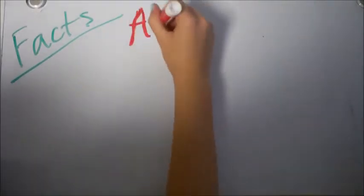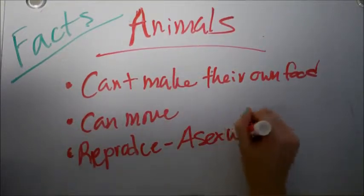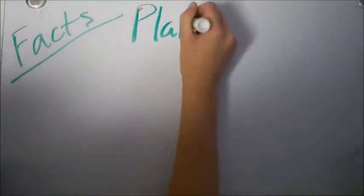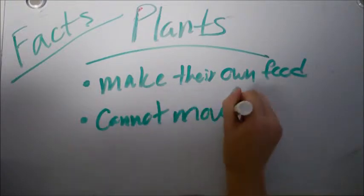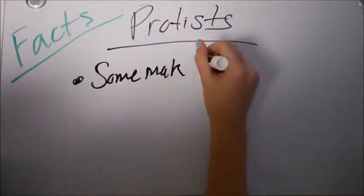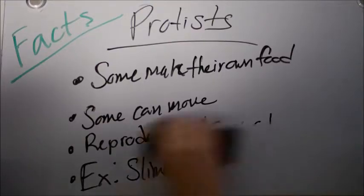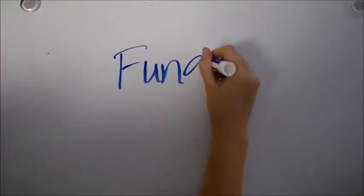Facts about animals is that they cannot make their own food, can move, and reproduce asexually and sexually. Plants make their own food, but cannot move and reproduce asexually and sexually. Facts about protists. Some make their own food. Some can move and reproduce only sexually. Examples like algae. Don't forget fungi.